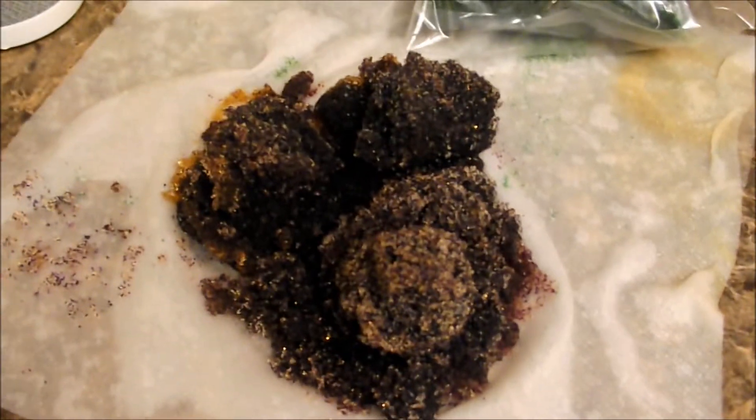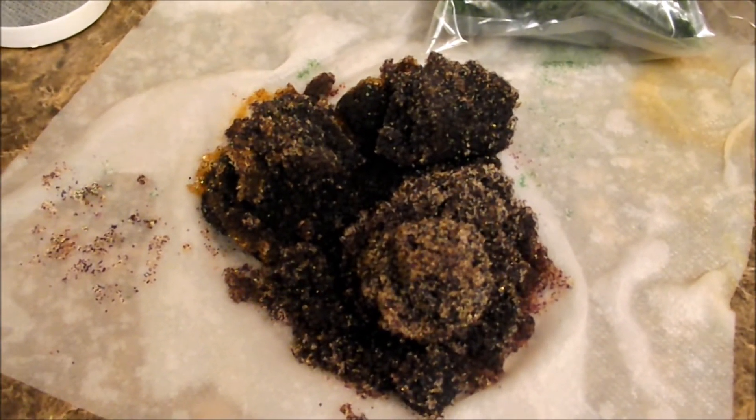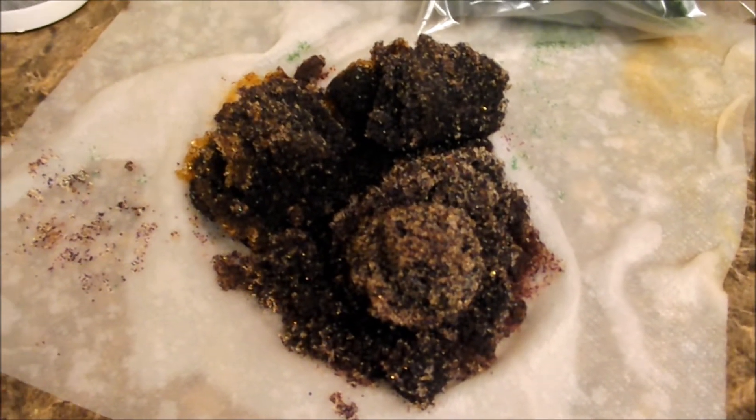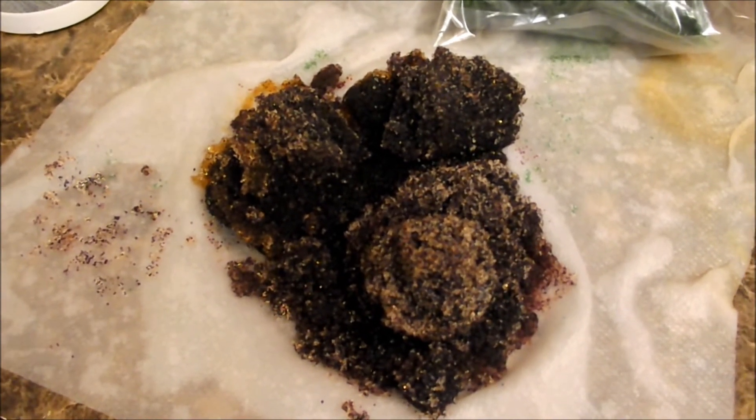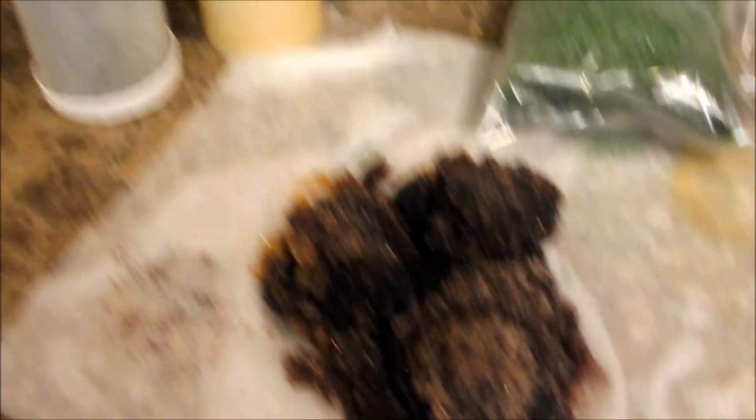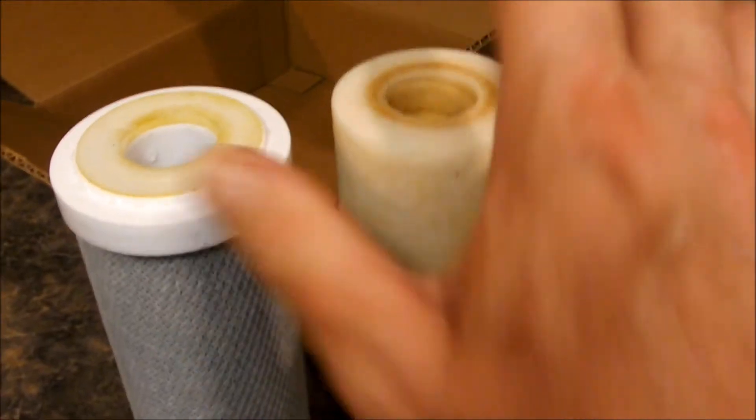Now I have really hard water. As a matter of fact, the RO unit I have recommends that I have a water softener put on and then go through the RO unit. So I should have been checking my filters earlier. Check your filters regularly people. Mine recommend every six months change on the membrane and then the two carbons as well.